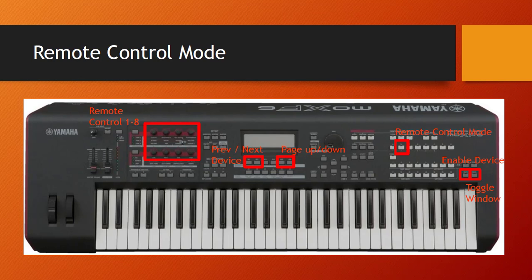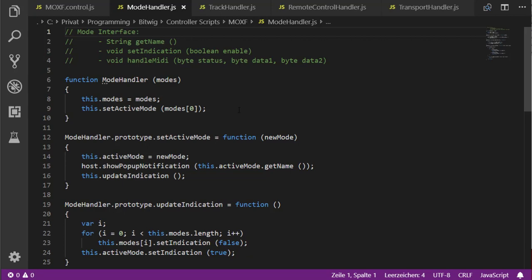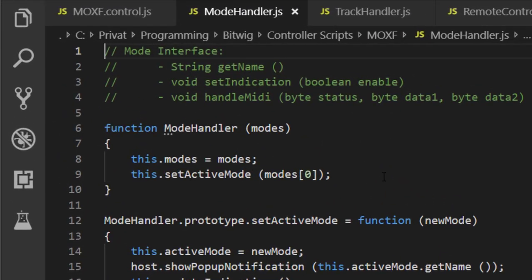In device mode we use all eight knobs to control the remote parameters, since they are always organized in pages of eight. We also want the ability to switch pages and switch devices. The first two buttons handle up and down device navigation, and for mute and solo: mute enables or disables the selected device, and the solo button toggles the device window.